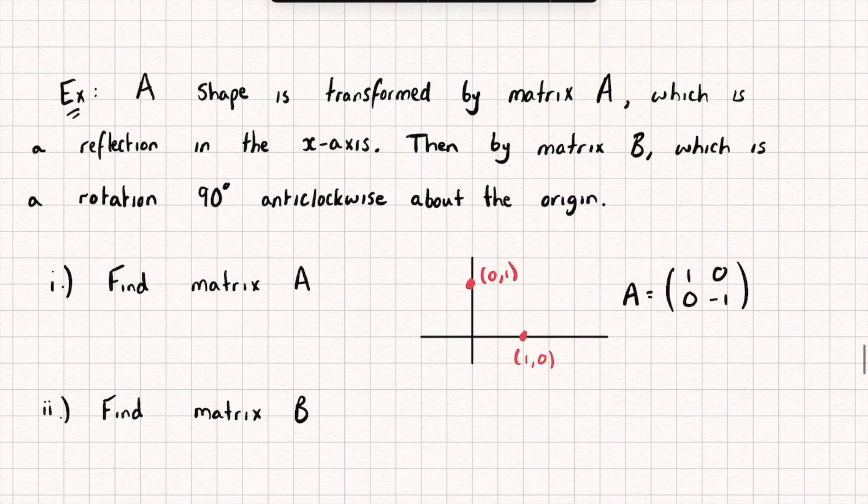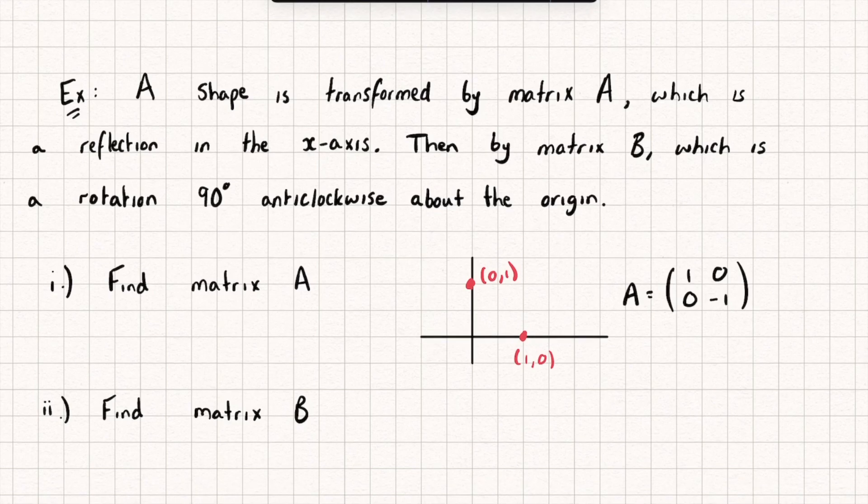Let's now do the same thing to find matrix B, which is a rotation 90 degrees anticlockwise about the origin. So the point (1, 0) is going to be rotated round and become the point (0, 1). And the point (0, 1) is going to be rotated round and turn into the point (-1, 0).